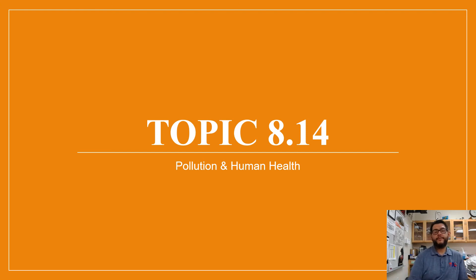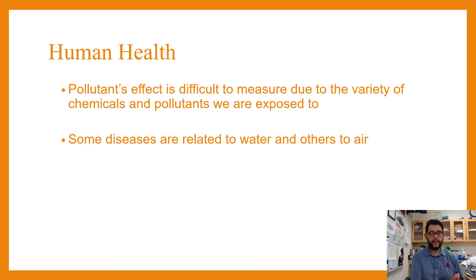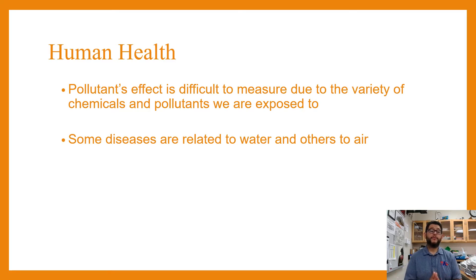Hey everybody, this is Mr. V and this is APES Review Video Topic 8.14, which is on pollution and human health. When we're talking about pollution, we've been mentioning how it can be in the environment — we talked about in Unit 7 how it can end up in the air, and this has been about how it ended up in the ground and the water. We need to talk about diseases and how those chemicals and pollutants can expose us to certain things.